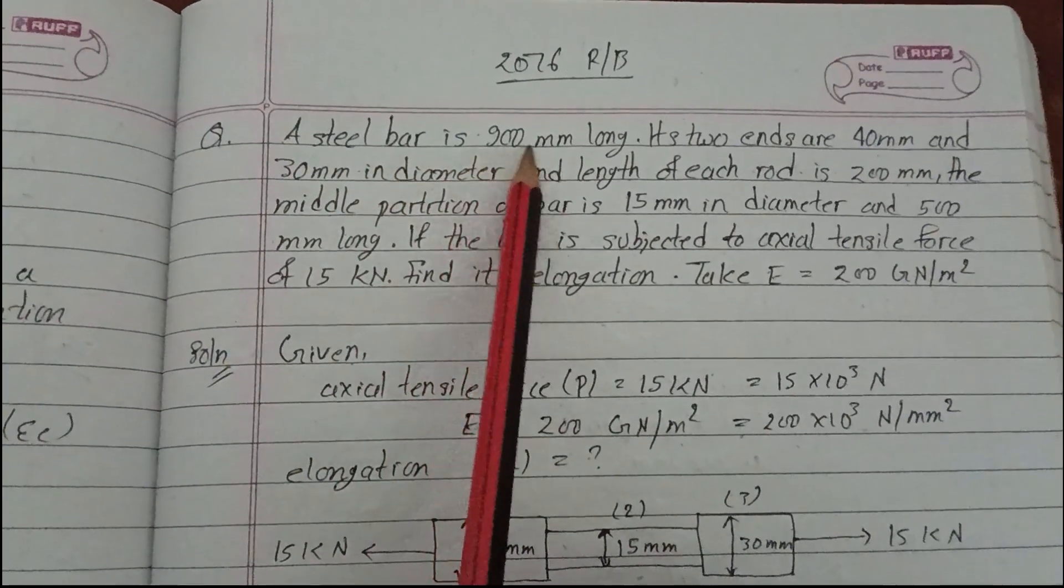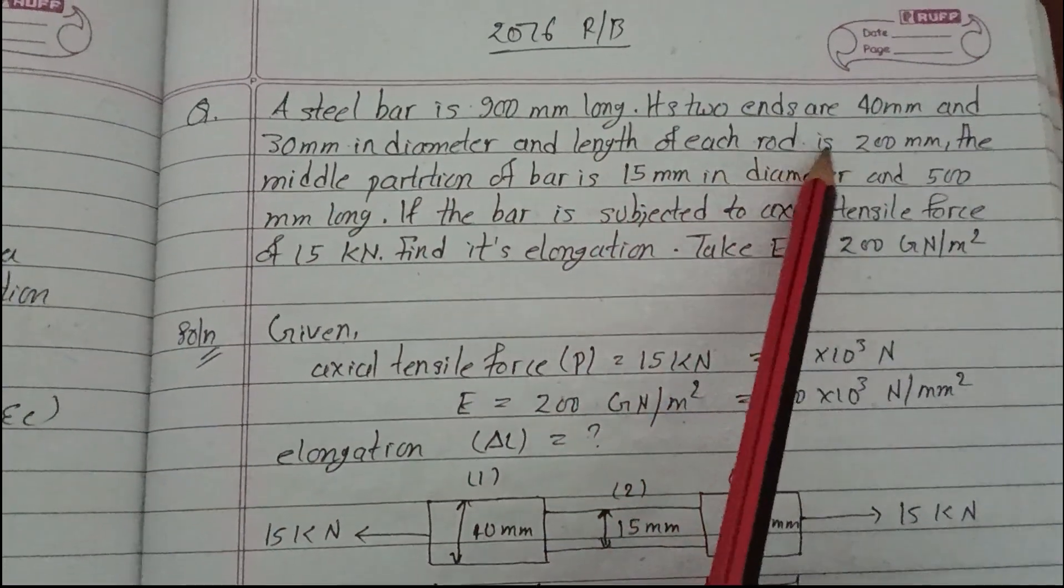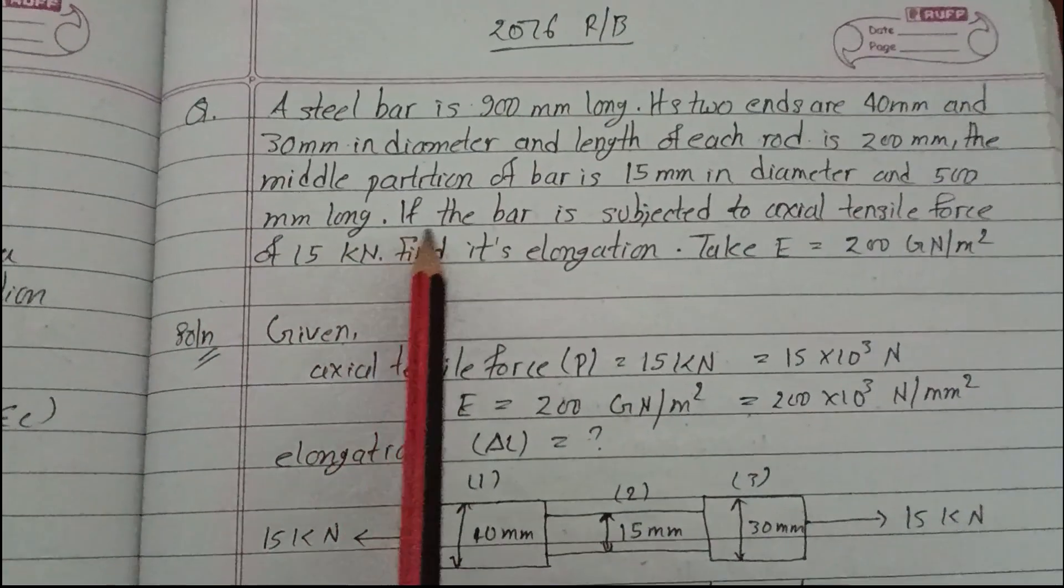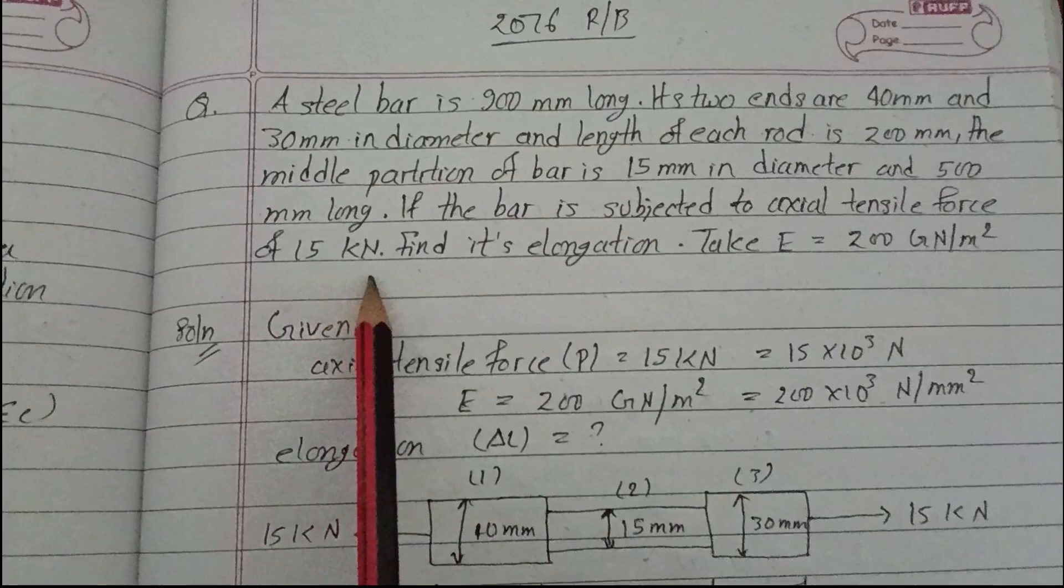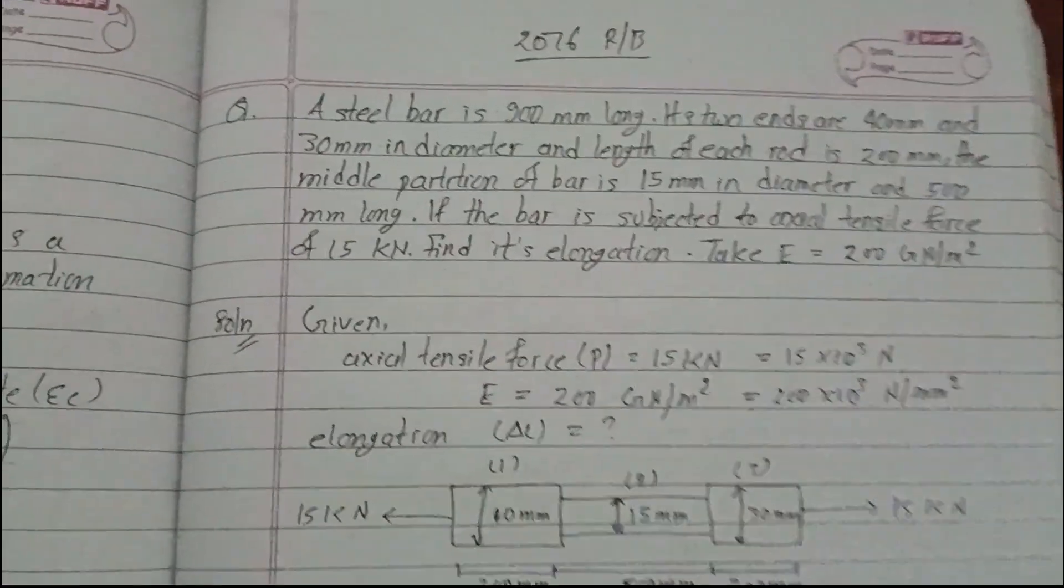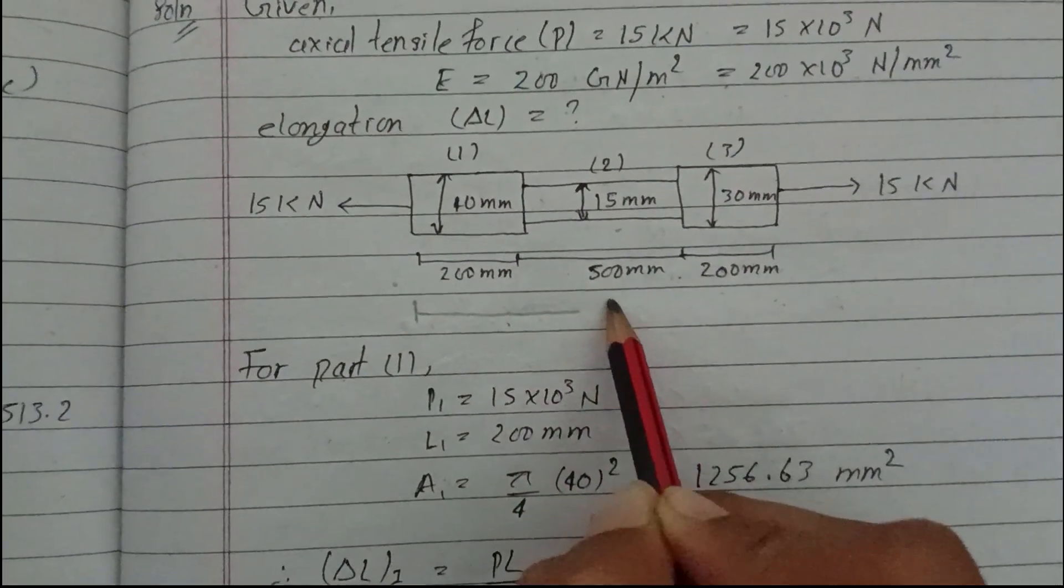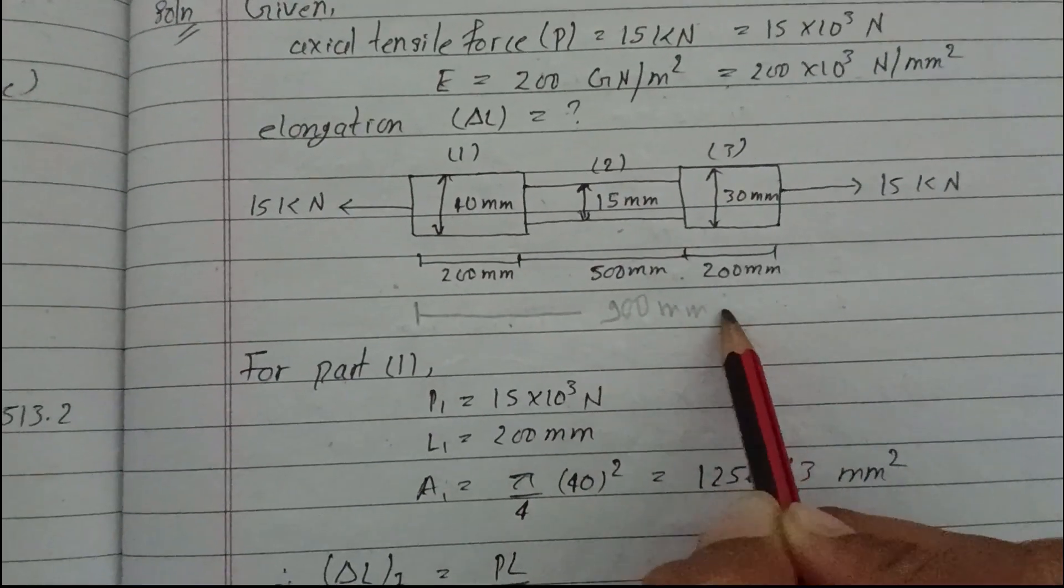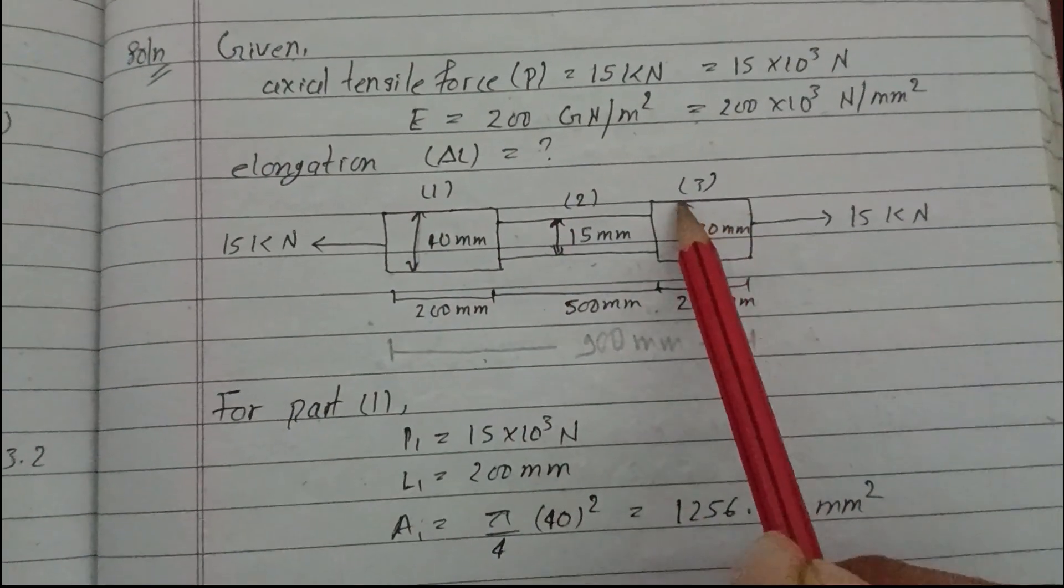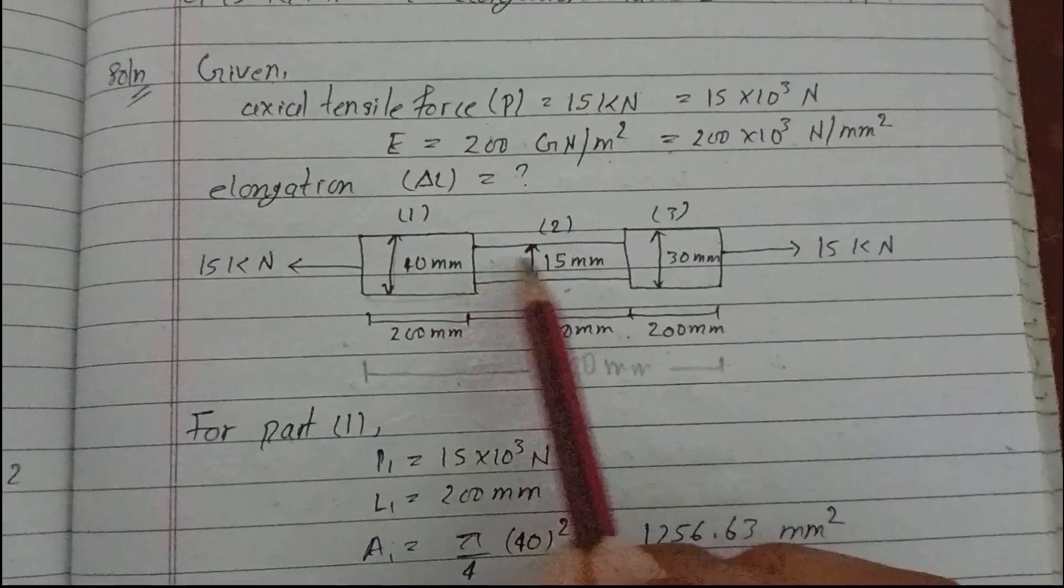The question is: A steel body is 900 mm long. Its two ends are 40 mm and 30 mm in diameter and the length of each end is 200 mm. The middle portion of the bar is 15 mm in diameter and 500 mm long.